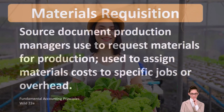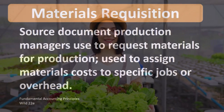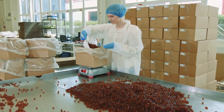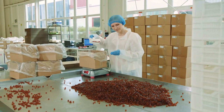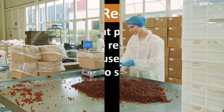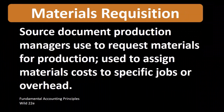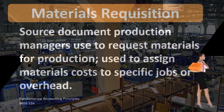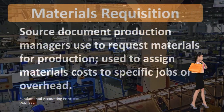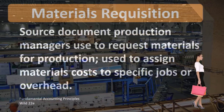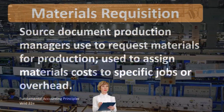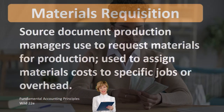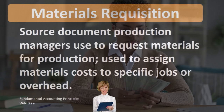Considering materials requisition, we're thinking about the raw materials portion at the front end of the production process. Those raw materials need to be transferred to the production process — work in process. The materials requisition form is used to track that transfer, similar to how recording sales is done through the form of an invoice.